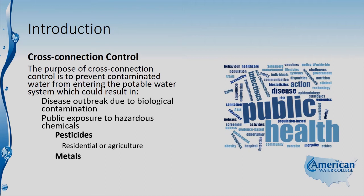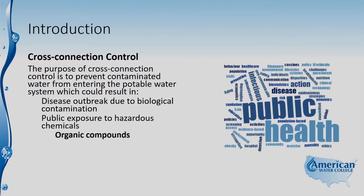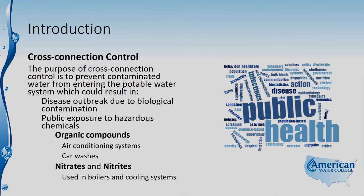Or metals, which could come from cooling system cross connections or from metal fabrication and plating shops. Also organic compounds, which could come from air conditioning systems or car washes, and nitrates and nitrites, which are used in boilers and cooling systems.